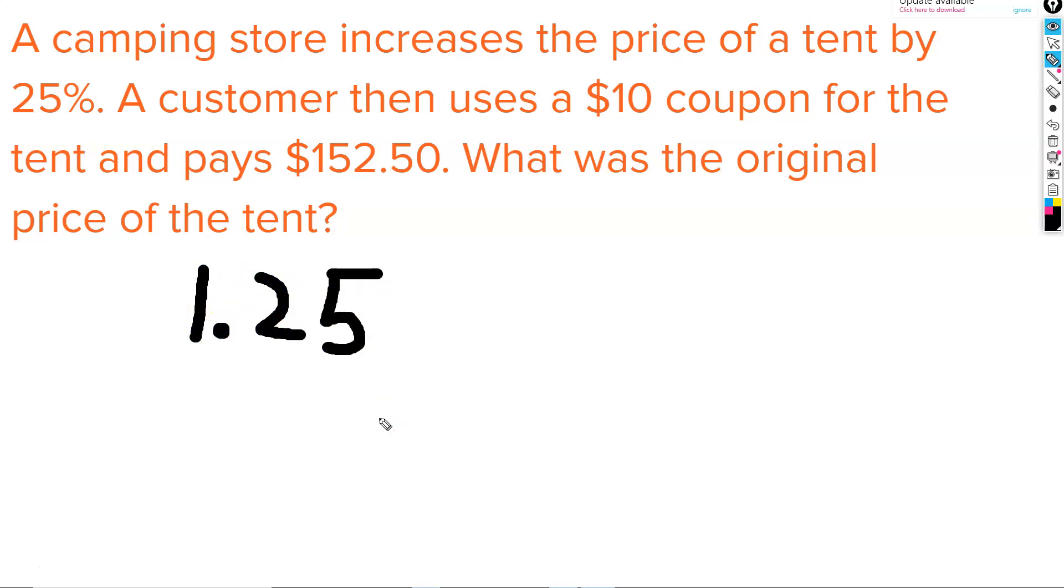This 125% is being multiplied by the original price of the tent. Because we don't know the original price, we're going to represent it with x. After this price increase, we also have a coupon for $10. We're going to subtract 10. And then the total that we pay is $152.50.